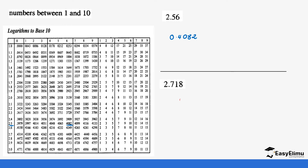Next value: log(2.718). This has three decimal places. We go to 2.71, which gives us 0.4330. Then we go to the differences section for the third decimal place, 8, along the same row, which gives us 13, that is 0.0013. Since it's addition, we add: 0.4330 + 0.0013 = 0.4343.